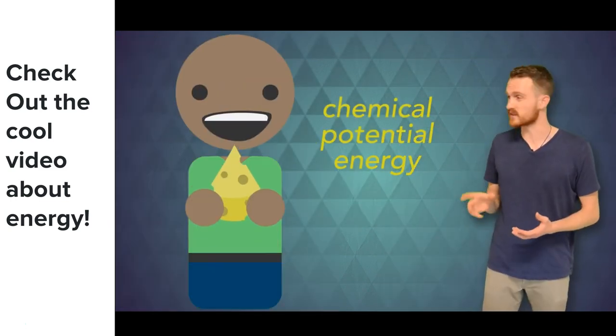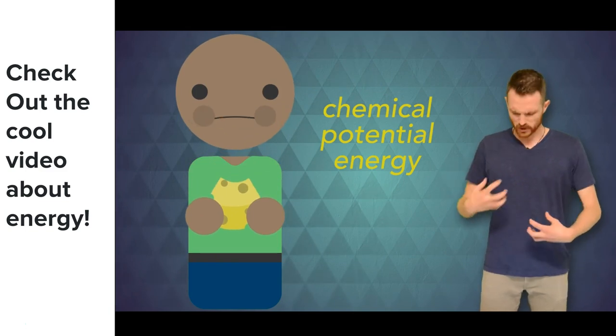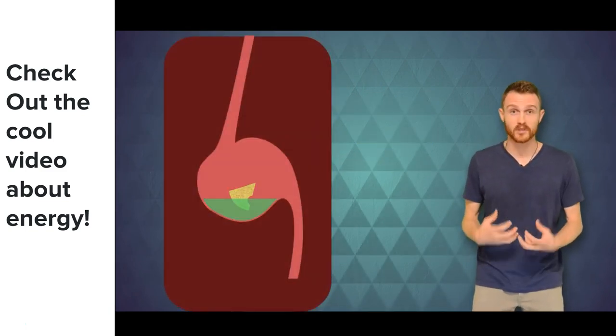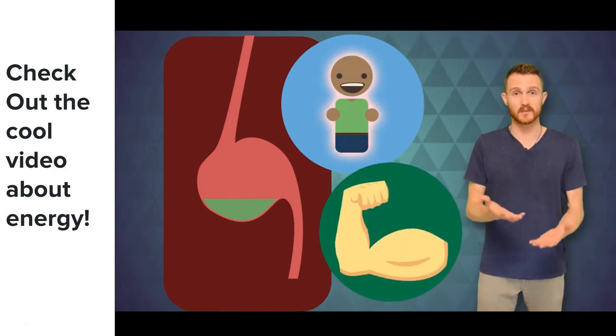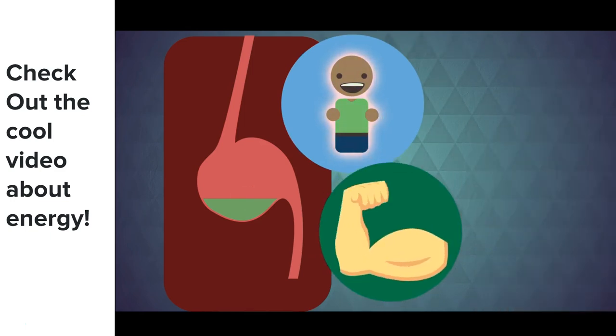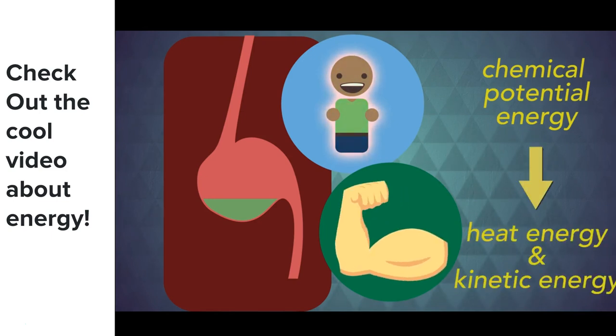A really similar thing happens when you eat food. When your body breaks down that food chemical reactions occur that keep your body warm and allow your muscles to move. You change the chemical potential energy in the food into heat energy and kinetic energy.